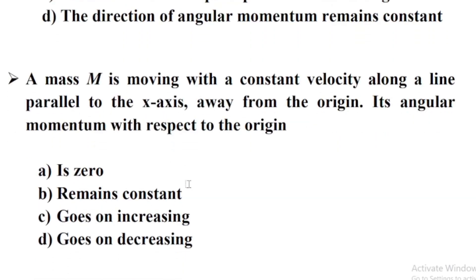A mass M is moving with a constant velocity along a line parallel to the x-axis away from the origin. Its angular momentum with respect to the origin Option B remains constant.